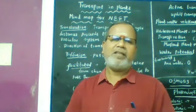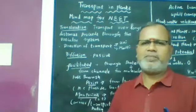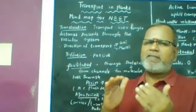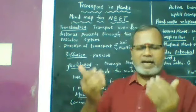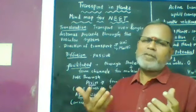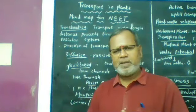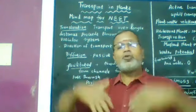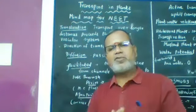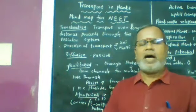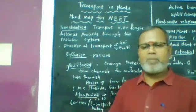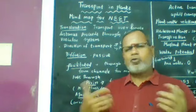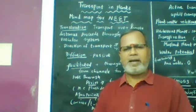Transport over longer distances proceeds through the vascular system. Water and minerals are transported through one route, and food materials are transported through another. Transport from root to aerial parts, and from leaf to other parts, occurs via the vascular system.